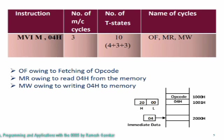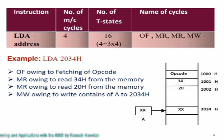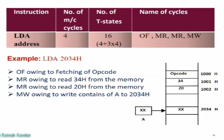Next instruction is LDA address — for example, LDA 2034H. This instruction will load the contents of the accumulator from the given address. The number of machine cycles required are: first is opcode fetch, which is necessarily present; second is memory read owing to reading of the lower order byte 34H from the memory; memory read again to read the higher order byte 20H from the memory; and one more memory write in order to write the contents of the accumulator to the address 2034H.